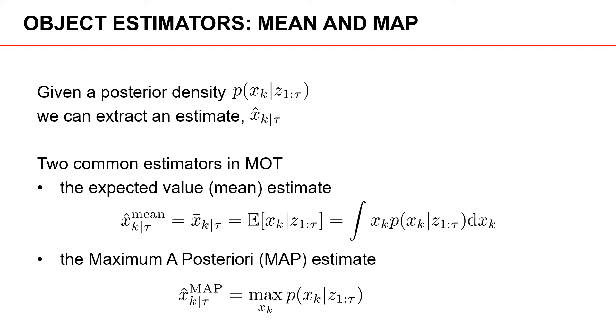Two common estimators in multiple object tracking are the expected value or mean estimate and the maximum a posteriori or MAP estimate. For the case that the posterior density is a Gaussian density, the mean estimate and the MAP estimate are the same.